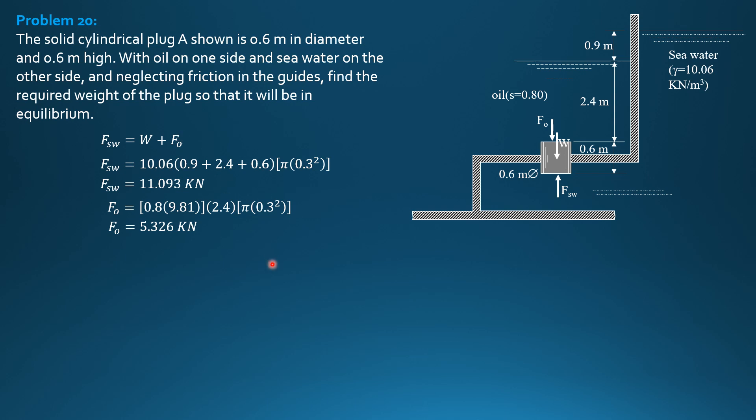Substitute above. So 11.093 equals W plus 5.326. So weight is 5.767 kilonewtons.